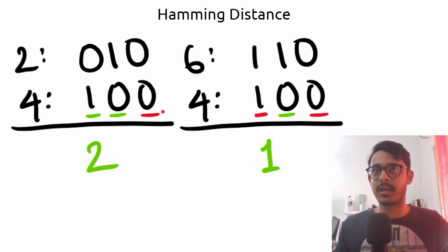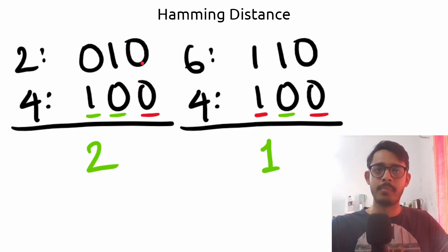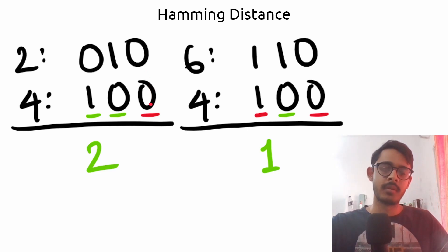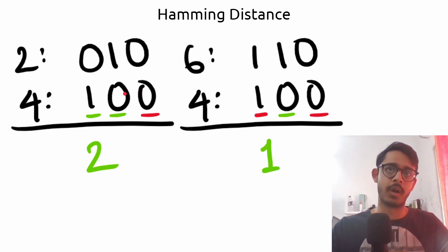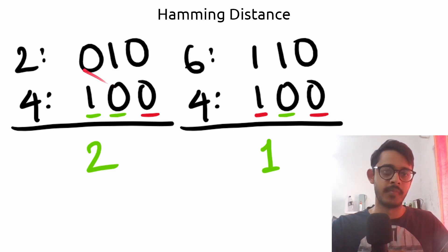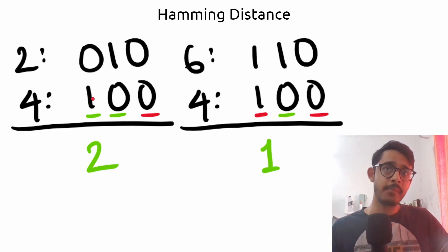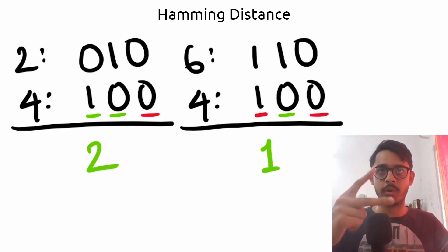Hamming distance simply says: count the number of bits that disagree. If we look at the 0th bit, both have 0, so there's no disagreement. Then we have 1 vs 0 — a disagreement, so we add 1. Then 0 vs 1 — another disagreement. So the hamming distance between 2 and 4 is 2.